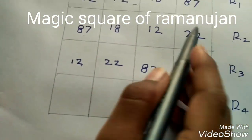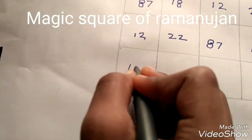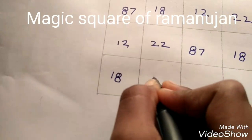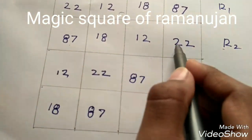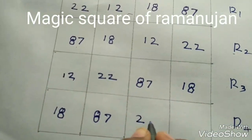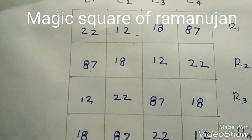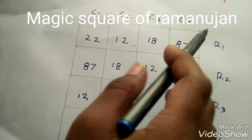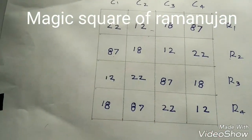We should reverse this 2nd row, these 2 boxes, 18 and 87. We should reverse these 2 boxes and we should write here 22 and 12. These 16 boxes filled with Ramanujan birthday dates. Our magic starts.